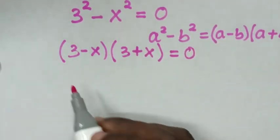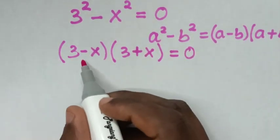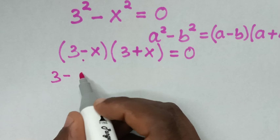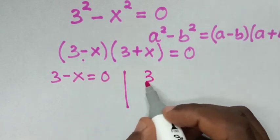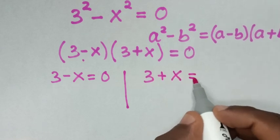In the next step, we have two solutions, where the first solution is 3 minus x equals 0, and the second solution is 3 plus x equals 0.